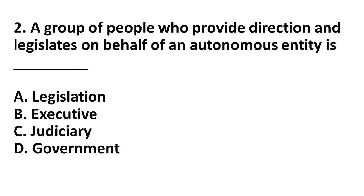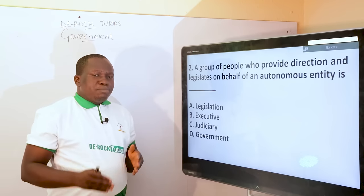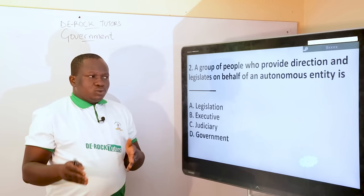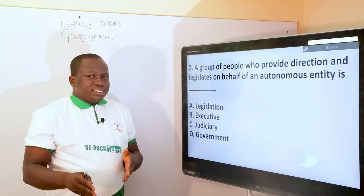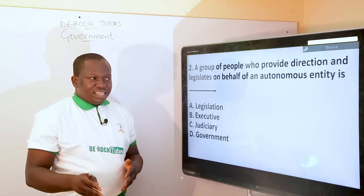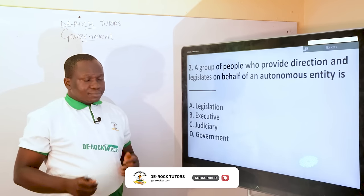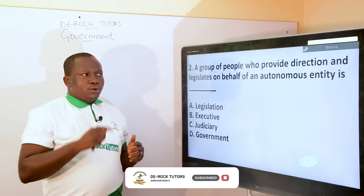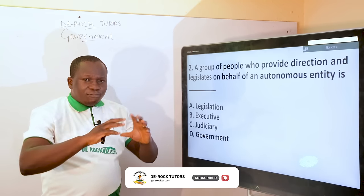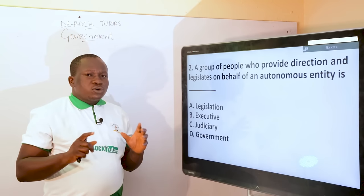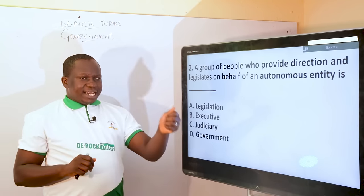The question says on behalf of an autonomous entity. An autonomous entity refers to an independent, sovereign entity. Before 1960, Nigeria was not autonomous because we were not yet independent. On October 1, 1960, we became sovereign, independent, and autonomous, receiving the power to govern ourselves. So, a group of people who provide direction — that is, formulate policies — and legislate, that is, make laws, on behalf of an autonomous entity, that is, a country, is what?